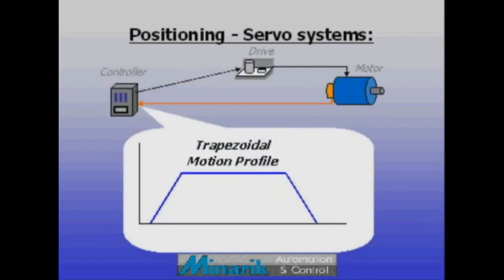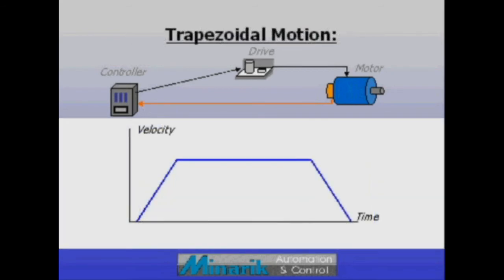The most common type of move uses what's known as a trapezoidal motion profile. The trapezoid refers to a graph of velocity versus time.